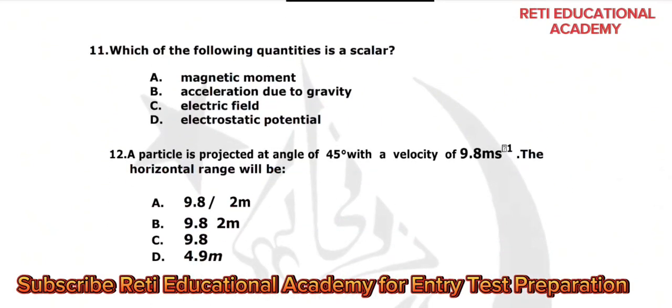Question number 12: a particle is projected at an angle of 45 degrees with a velocity of 9.8 meters per second. The horizontal range will be: A) 9.8 m/s, B) 9.8, C) 9.8, D) 4.9. The correct option is C, 9.8. For more videos, test preparation, admission information, and scholarship announcements, subscribe to the Educational Academy YouTube channel and follow us on TikTok and Facebook.